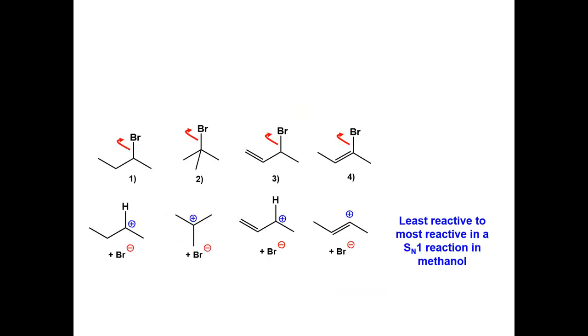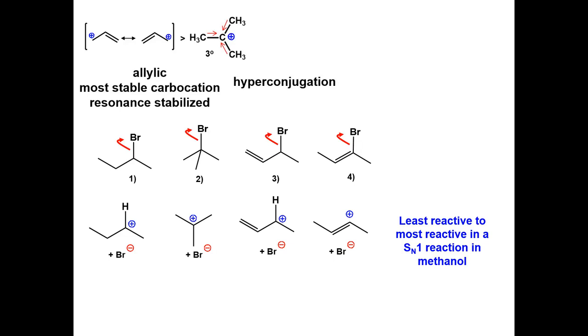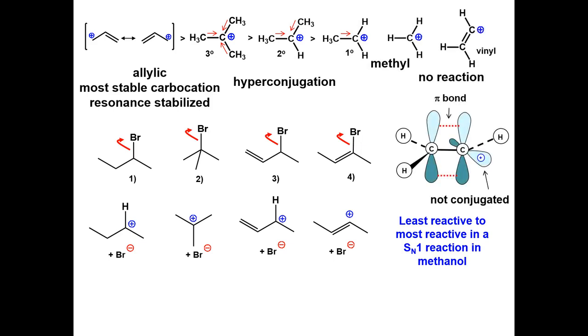Now think about the stability of the carbocation. The most stable carbocation would be allylic, because of the resonance stabilization. Followed by tertiary, secondary, then primary, because of hyperconjugation. The methyl carbocation will not form in solution. The vinylic carbocation is very unstable because it is not resonance stabilized by the pi bond.